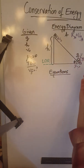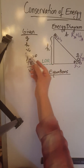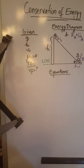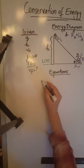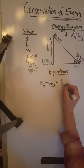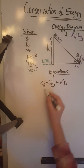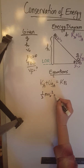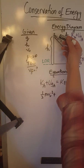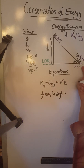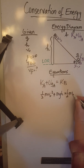We have energy at A and energy at B. We do not have friction, so in the absence of non-conservative forces we do not need to worry about the work done by a non-conservative force. All we have to do is set the energies equal to each other. So under equations: kinetic energy at A plus gravitational potential energy at A equals kinetic energy at point B. That gives us one-half m V₀² plus mgh equals one-half m Vf².